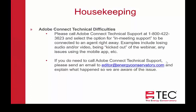If you're having technical difficulties, we recommend that you contact Adobe Technical Support. Their phone number is 1-800-422-3623. Select the option for in-meeting support and you'll get connected to an agent right away. We've had good luck with Adobe Connect technical support in the past. Some examples of issues could be losing audio or video, being kicked out of the webinar, or any issues using the mobile app. If you need to call Adobe Connect for tech support, please send us an email so we're aware of any issues.